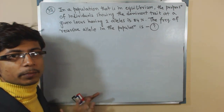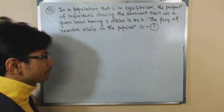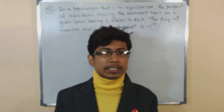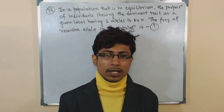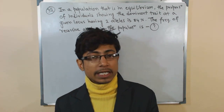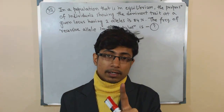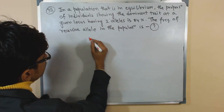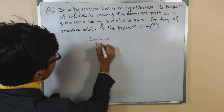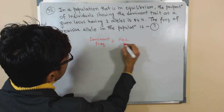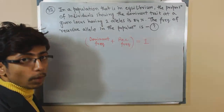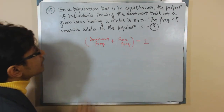This is the easiest kind of Hardy-Weinberg problem you are going to get. According to Hardy-Weinberg equilibrium, the frequencies of the dominant allele and the recessive allele present in a population must add up to one. So the formula is: dominant allele frequency plus recessive allele frequency equals one.